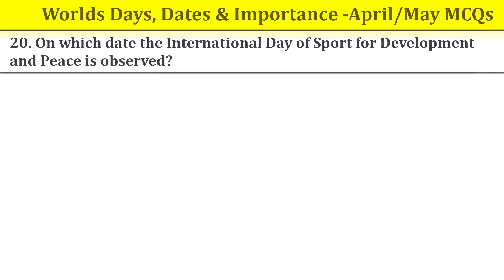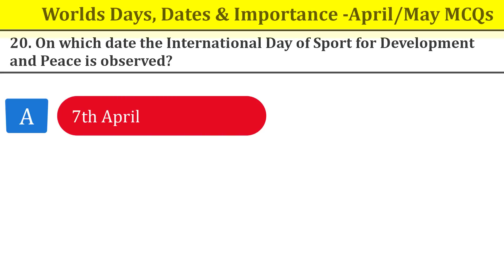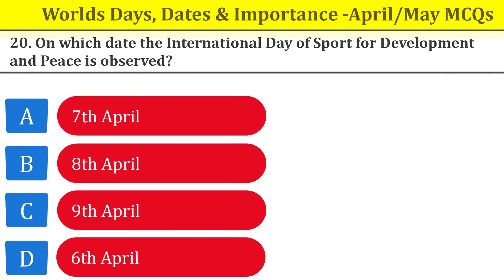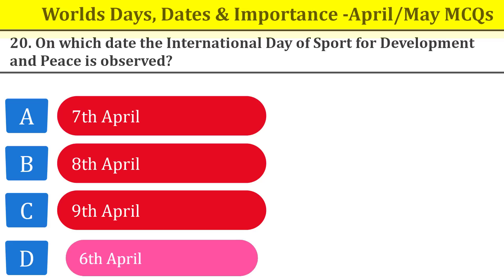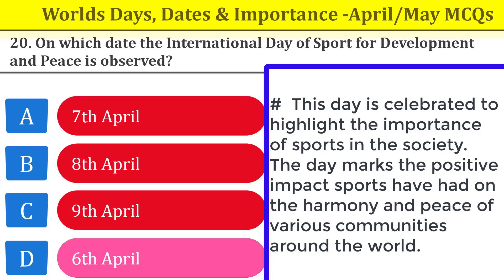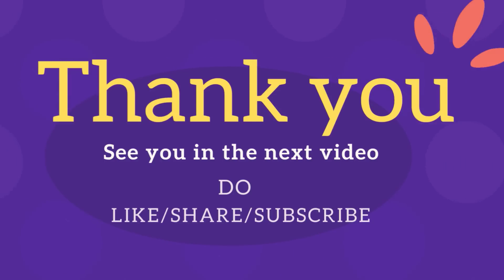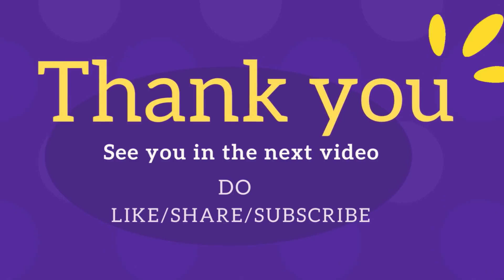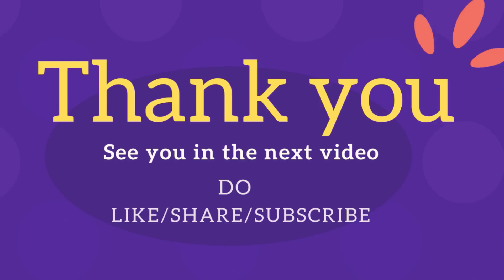Last question, number twenty: on which date is the International Day of Sports for Development and Peace observed? The answer is 6th April. This day is celebrated to highlight the importance of sports in society and marks the positive impact sports have had on the harmony and peace of various communities around the world. I hope this information adds quality to your preparation — stay tuned, like this video, share it with your friends, subscribe to my channel, and best of luck for your future. Thank you.